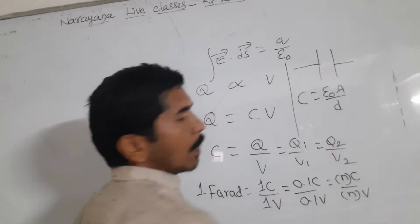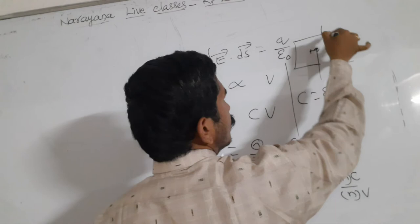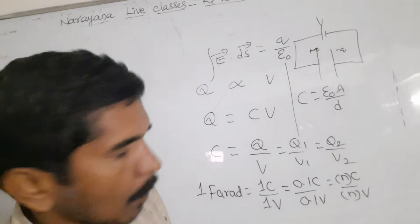Then we are going to take the parallel plate capacitors. One is connected with charge, this is plus Q, this is minus Q. If you are connected to that, this is potential.